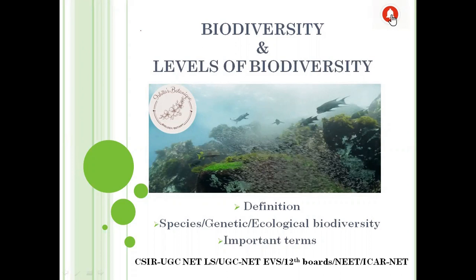If an alien species from a distant galaxy visits our planet Earth, the first thing that would amaze and baffle them would most probably be the enormous biodiversity of our planet Earth. Our planet Earth consists of enormous biodiversity — astonishing and fascinating creatures — and this biodiversity is inherent in the occurrence of various types of environmental conditions in different parts of the Earth.